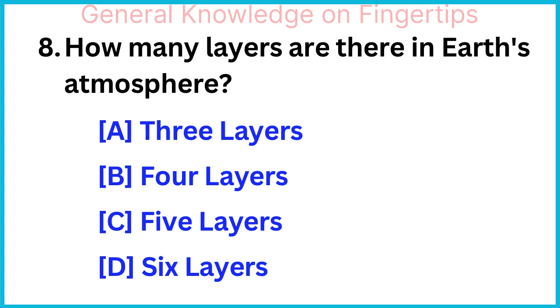How many layers are there in Earth's atmosphere? 5 layers.